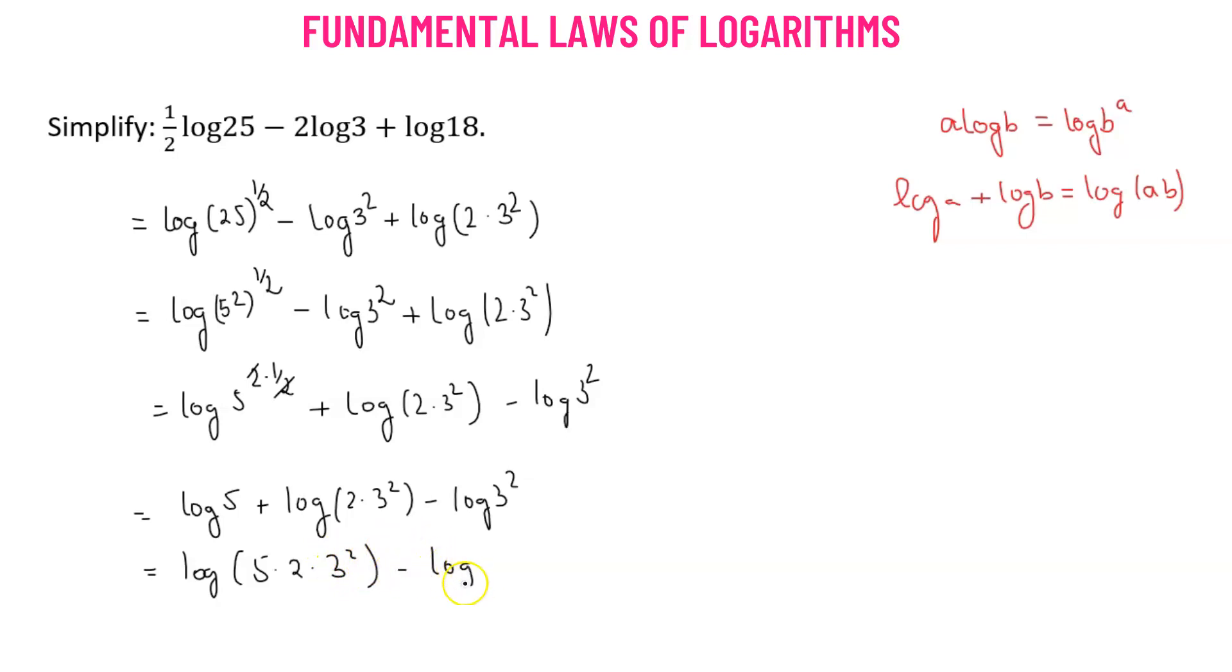We have negative log of 3 squared. We can combine these two logarithms by using the property log of a minus log of b as log of a over b. So this will give us log of 5 times 2 times 3 squared divided by 3 squared.